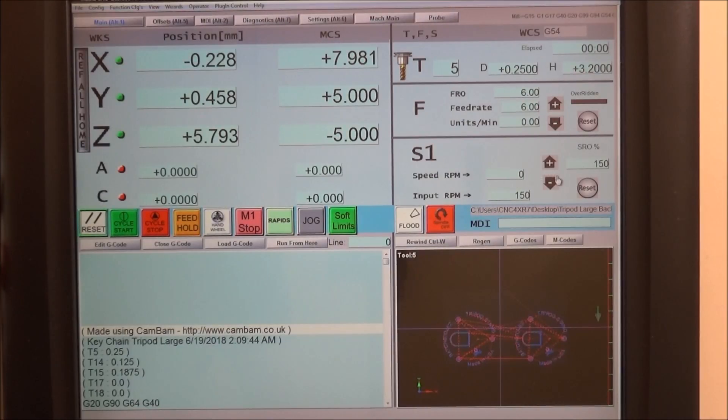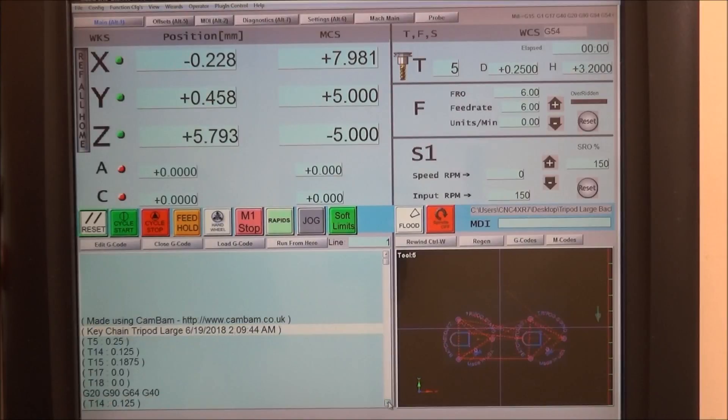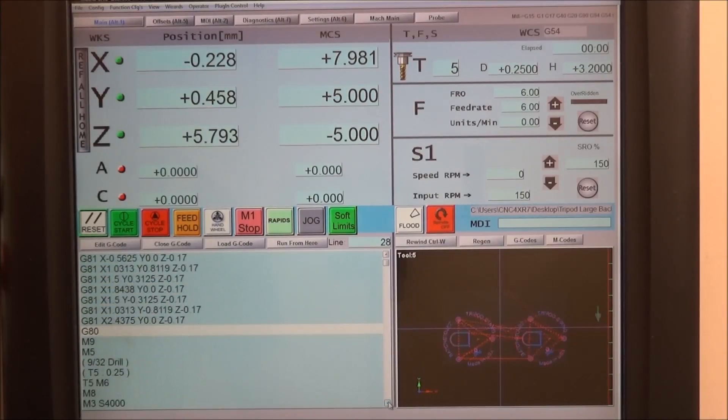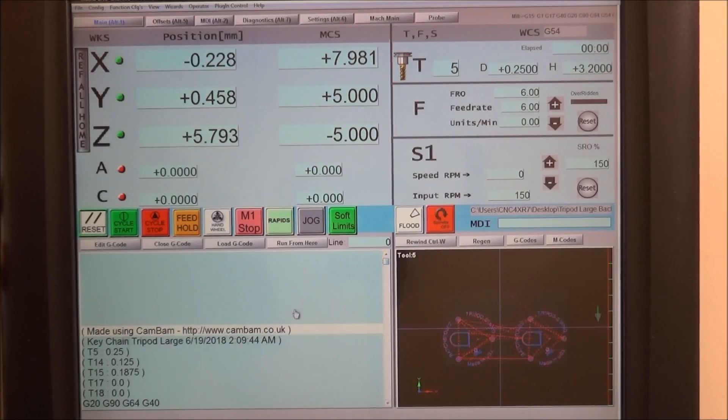We have our nice big toolpath window and a nice big g-code window. This is really nice when the g-code's running because it always keeps the g-code in the center here, but it kind of gives you a little bit easier visual of what's coming up, at least in my opinion.